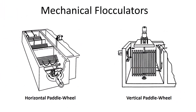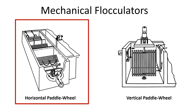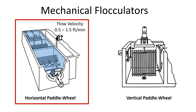Here we have two types of mechanical flocculators. The horizontal paddle wheel allows water to move through from end to end, with the paddle wheels moving in a horizontal fashion to cause gentle mixing. The water flows through the flocculation basins at a flow velocity of 0.5 to 1.5 feet per minute.